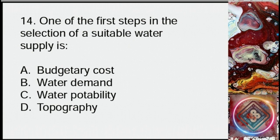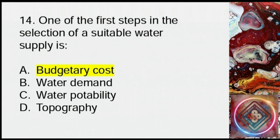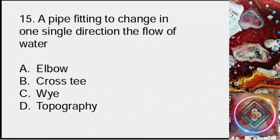Question 14: One of the first steps in the selection of a suitable water supply is: A: Budgetary cost, B: Water demand, C: Water potability, D: Topography. Answer: A, budgetary cost.